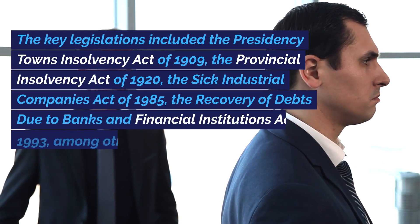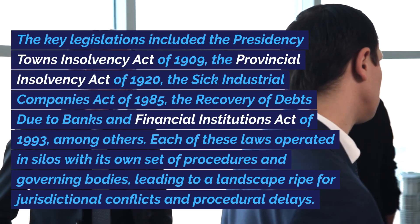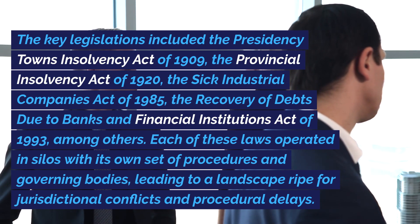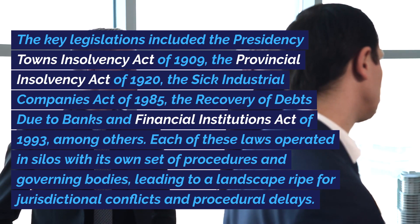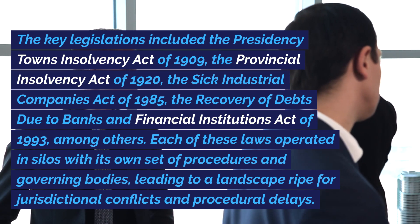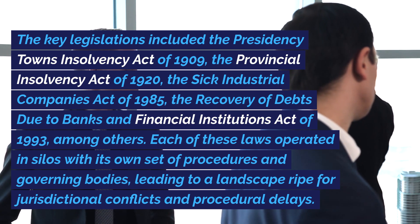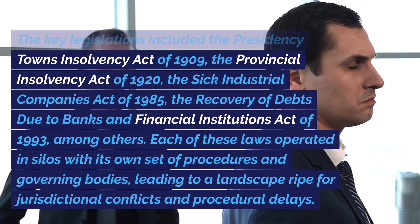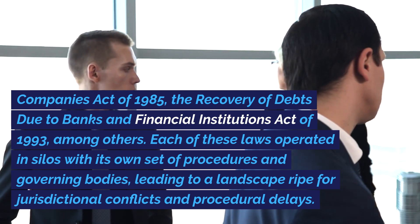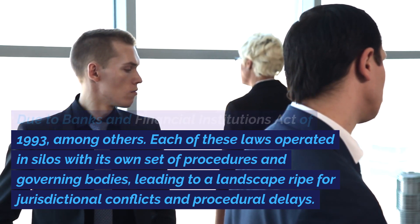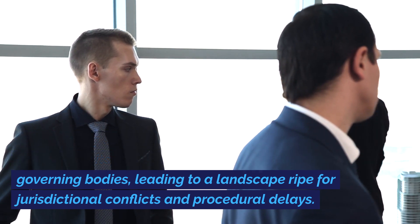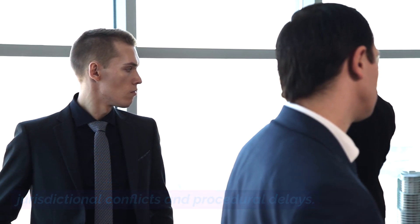The key legislations included the Presidency Towns Insolvency Act of 1909, the Provincial Insolvency Act of 1920, the Sick Industrial Companies Act of 1985, the Recovery of Debts Due to Banks and Financial Institutions Act of 1993, among others. Each of these laws operated in silos with its own set of procedures and governing bodies, leading to a landscape ripe for jurisdictional conflicts and procedural delays.